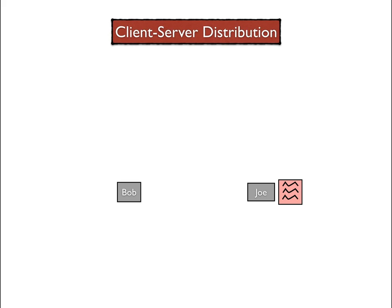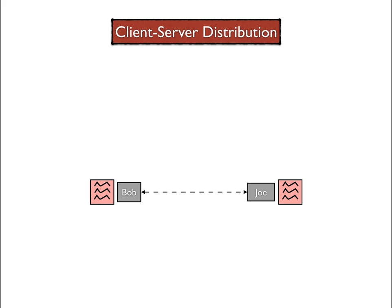In this example, to obtain a copy of the red file, Bob first establishes a connection to Joe and requests the red file through that connection. Joe then sends a copy of the red file over the connection. Now Bob has a copy of the file, and all is good. This distribution model is fine as long as the demand for the content requires less resources than what is available from Joe, in the form of bandwidth and computing power.